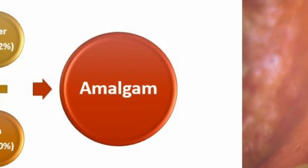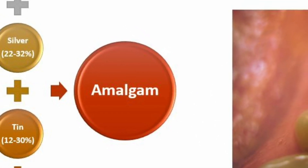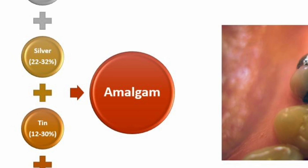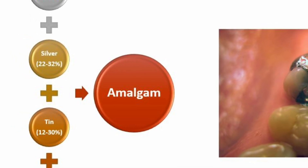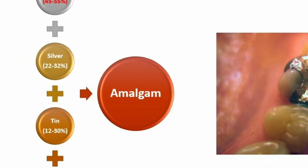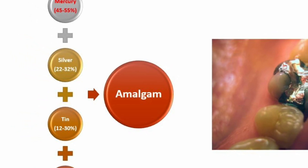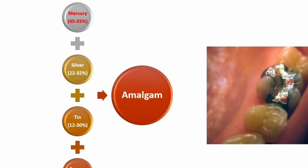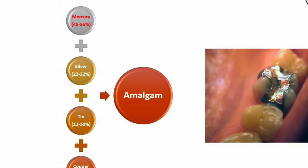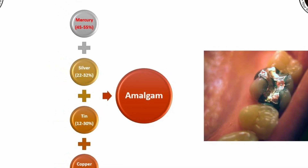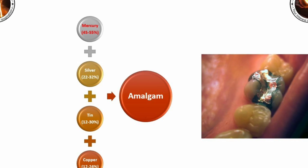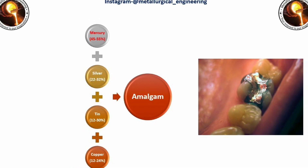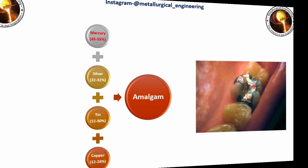The first alloy is amalgam. It is a mercury-based alloy with silver, tin, and copper as the main alloying elements. The composition of amalgam is 45 to 55 percent mercury, 22 to 32 percent silver, 12 to 30 percent tin, and 12 to 24 percent copper. It is used in older dental fillings and mining.